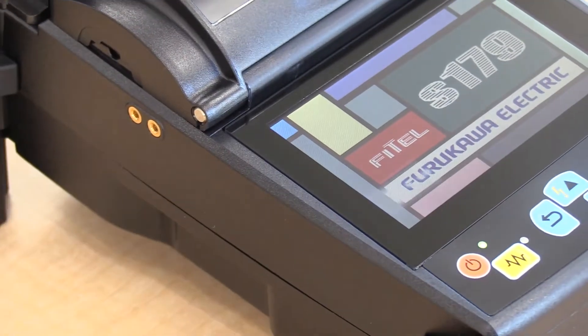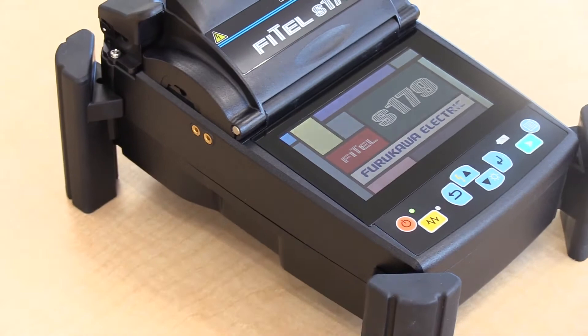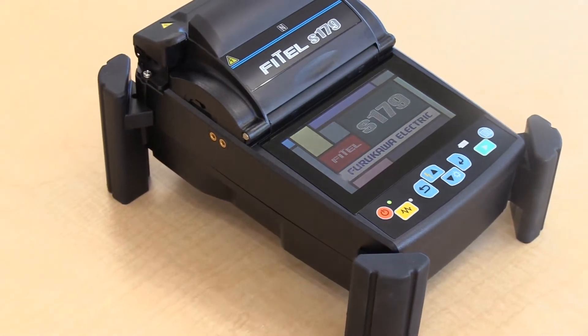The Fattel S179 Handheld Core Alignment Fusion Splicer offers powerful performance, delivering fast and reliable optical fiber splicing even under harsh environmental conditions.